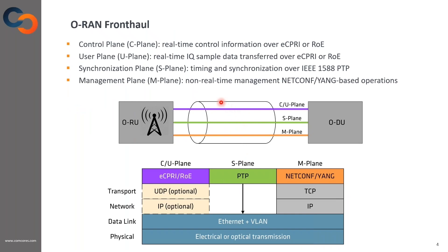The ORAN fronthaul carries very sensitive information between the radio unit and the distributed unit. This sensitive information is divided into four data planes.